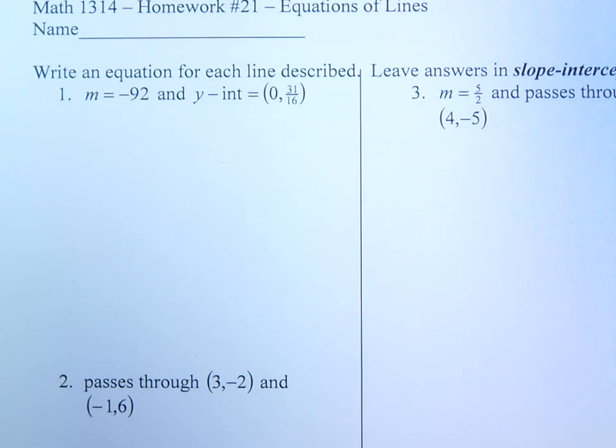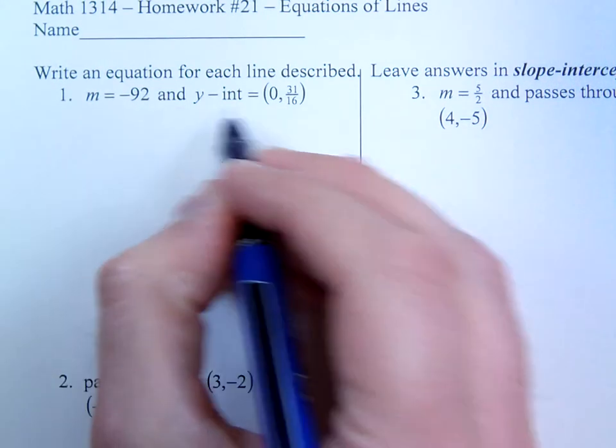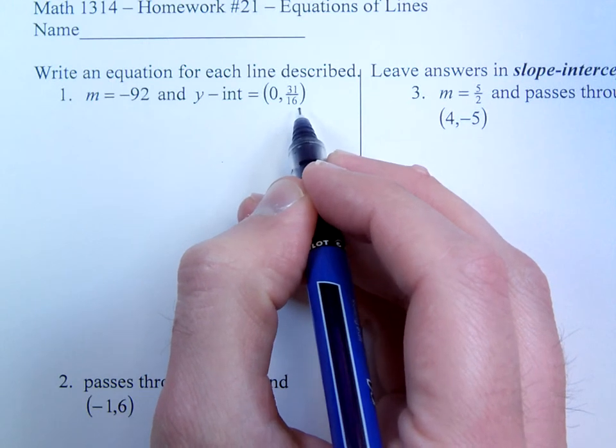Homework 21 has us looking at writing equations of lines given certain information. Now the instructions here say to leave it in slope intercept form, so let's make sure that we take care of that. So this first one says the slope is negative 92 and the y intercept is 0, 31 sixteenths.